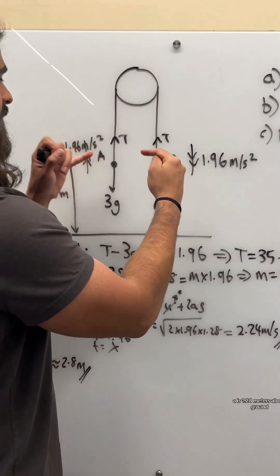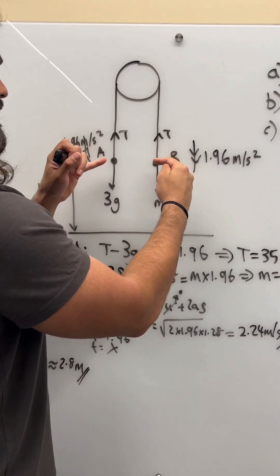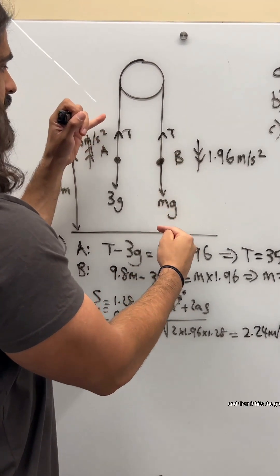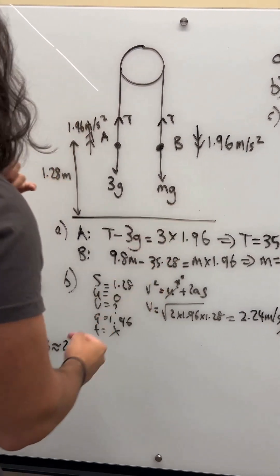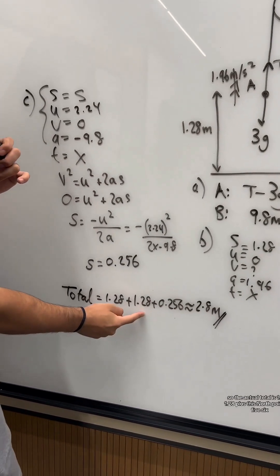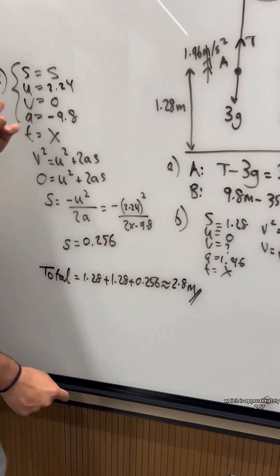So what's the actual total? Think about it. A is 1.28 meters above ground. Then it moves with B, and then B hits the ground. So A actually moves another 1.28, and then it does that 0.256. So the actual total is 1.28 plus 1.28 plus 0.256, which is approximately 2.8 to 2 significant figures.